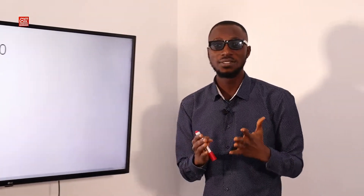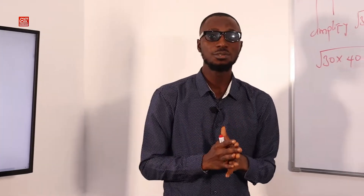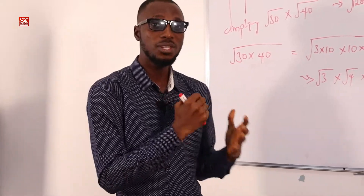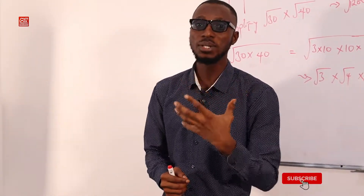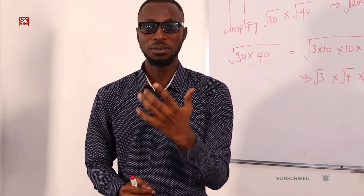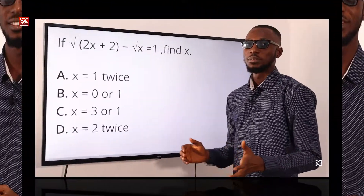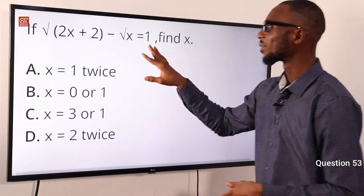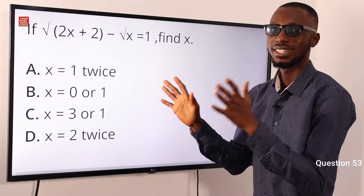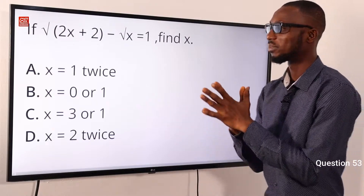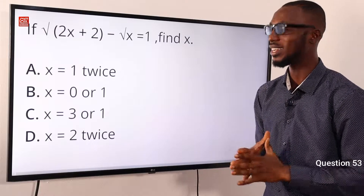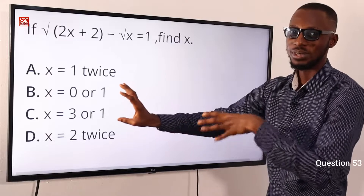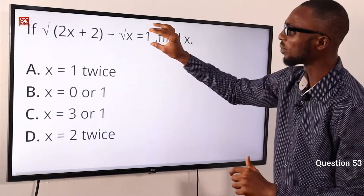We strongly believe this content is helpful. Hit the like button, click subscribe, and tap the bell notification so you get alerts when we upload the next video. Number 53: if root(2x + 2) minus root x equals 1, find x. For JAMB, you can pick the options and slot them in to see if they give you 1.